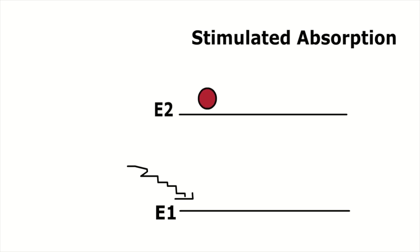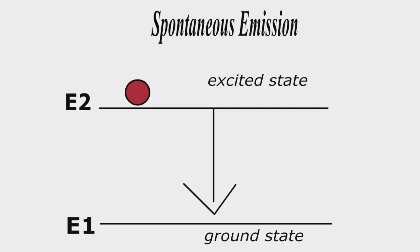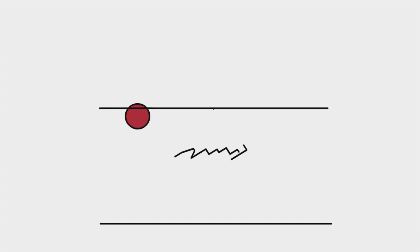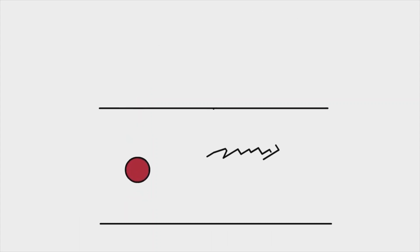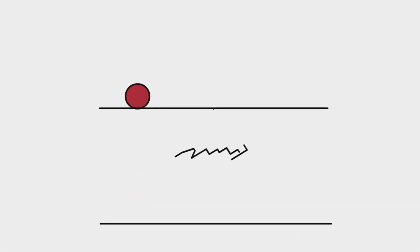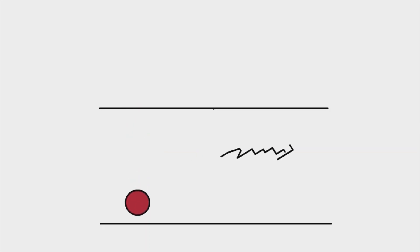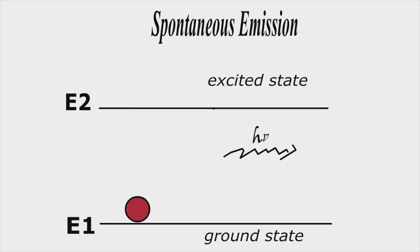For spontaneous emission, the electrons are initially in the excited energy level. This excited state is an unstable state, so the electron in the excited energy level will immediately come back to the ground energy level E1. As the electron moves from the higher energy level to the lower energy level, it releases a photon whose energy is equal to E2 minus E1.